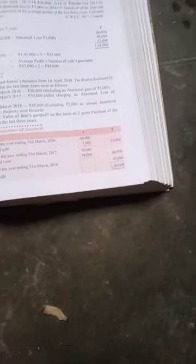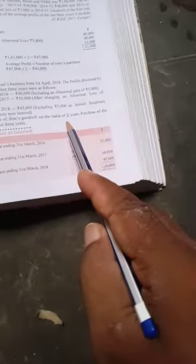Calculate the value of firm goodwill on the basis of 2 years' purchase of the average profit for the last 3 years. Last 3 years and goodwill not second, 2 years' purchase.